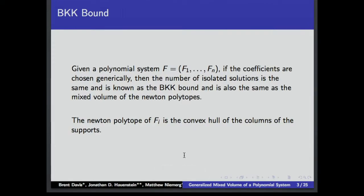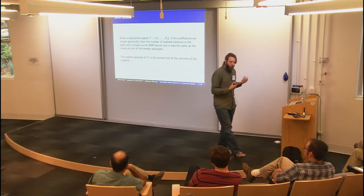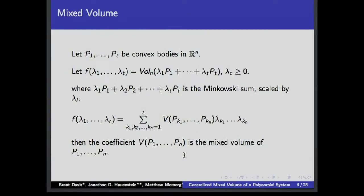The mixed volume is in the sense of Newton polytopes of a polynomial. If we take some polynomial f and look at the convex hull, this gives our convex body. We can then perform Minkowski sums and find the canonical mixed volume. As far as we're concerned in this talk, the mixed volume of a polynomial system is really the number of isolated solutions for generic coefficients.